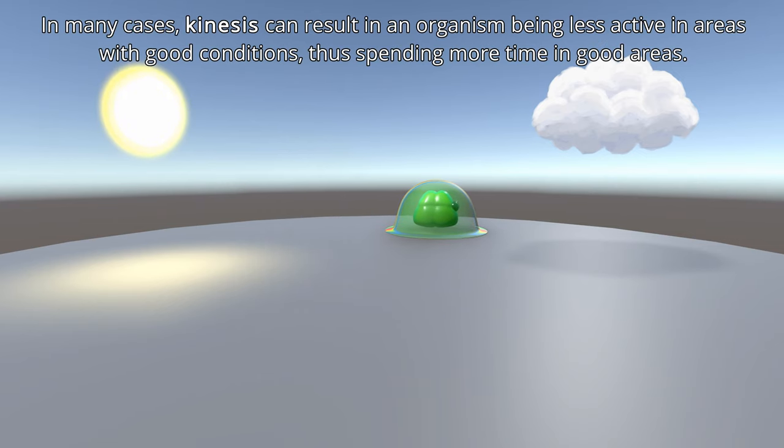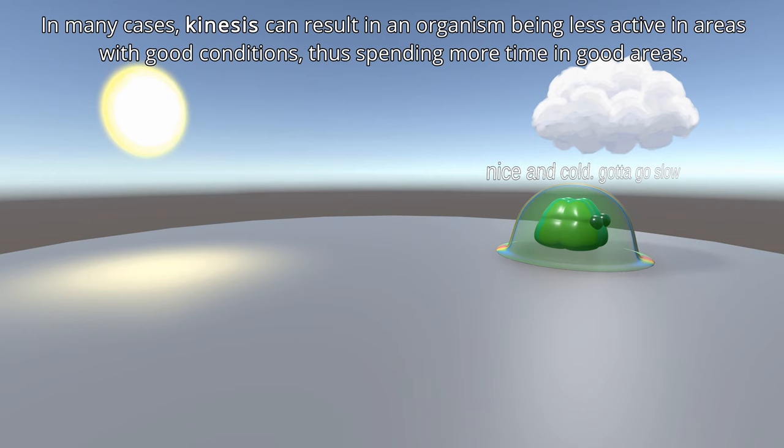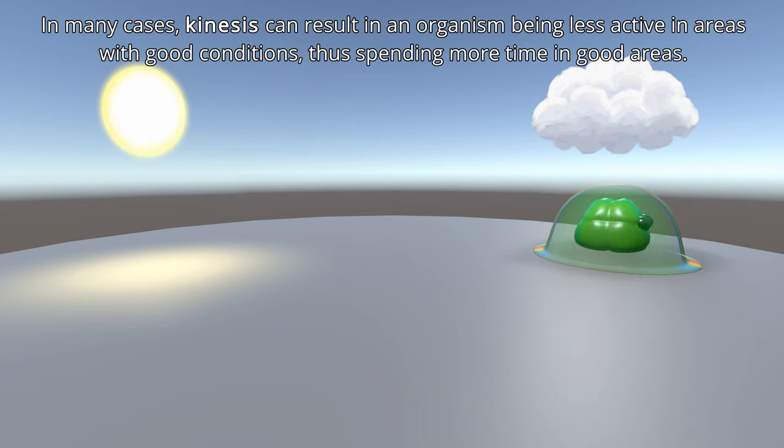What can happen with simple creatures like the slime is they can randomly wander into an area that's not good for them, and that will make them move faster or it'll make them turn more. That will cause them to hopefully get out of that area. And then if they randomly wander into an area that's nice, they'll maybe move a little slower and turn a little less, and that will cause them to stay in that area a little bit longer.